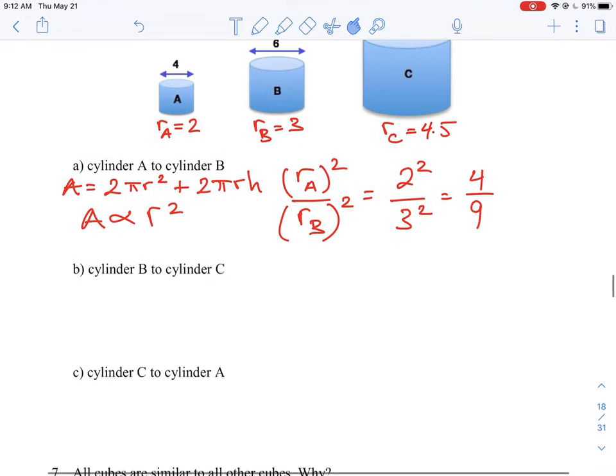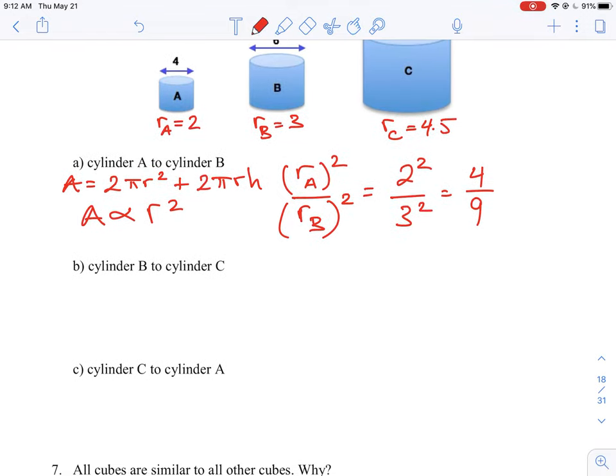And then if we look at the next question here, we have B to C, so we can do the same thing. We're going to square B and square C, so B is equal to 3 squared, and C is equal to 4.5 squared. Now in this case, we might have to just watch this a little, because we might get a decimal here.